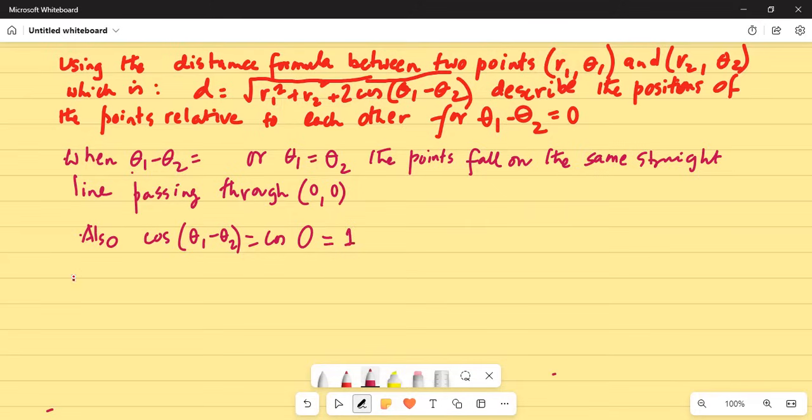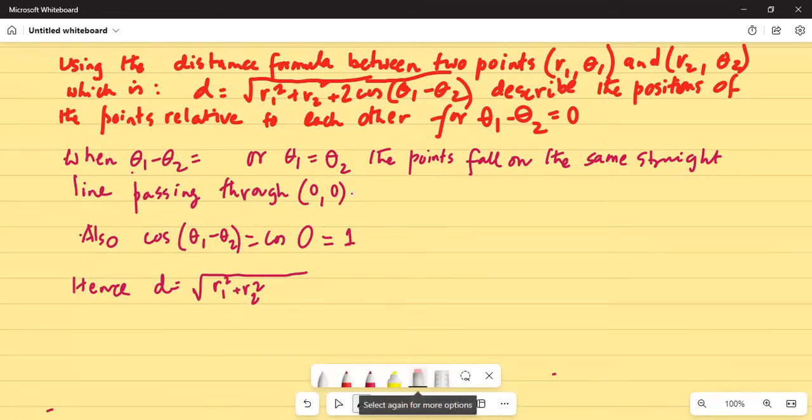Hence d is equal to square root of r1 squared plus r2 squared. And I noticed there's a mistake in my formula over here, so I have to clarify it.